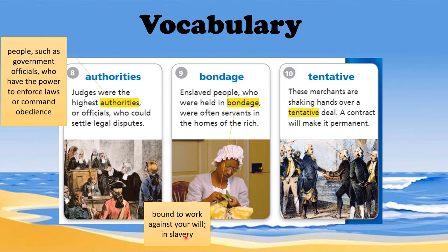Number ten is tentative. These merchants are shaking hands over a tentative deal; a contract will make it permanent. The word permanent is the opposite, or antonym, of tentative. So tentative means uncertain or temporary. Unless there is a signed contract on paper, shaking hands would not actually close or seal the deal.